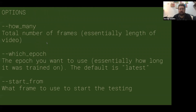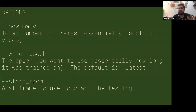There are options around how many frames to produce and which epoch to use — this is similar to choosing which pickle file you want to generate from. You can also set what frame you want to start from. By default it will start from the 60th frame of the video you provided, but there are ways to pass in a different image and get totally different results. I recommend playing with all of these options and seeing what you get.